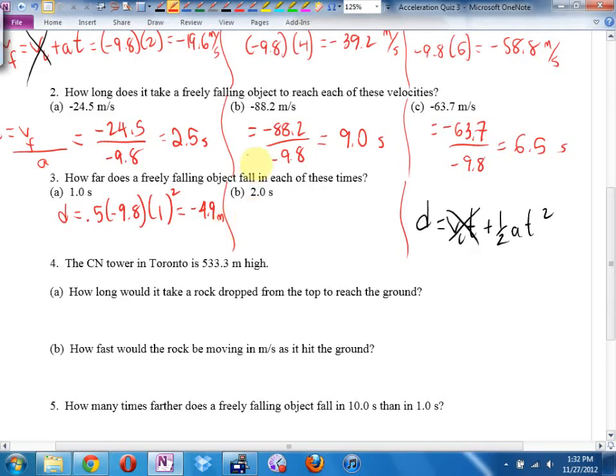Two seconds. That's going to be D equals 0.5 times negative 9.8 times two squared. Two squared is four, which is negative 39.2. No, half of that, negative 19.6. Negative 19.6 meters. And again, you could say positive.